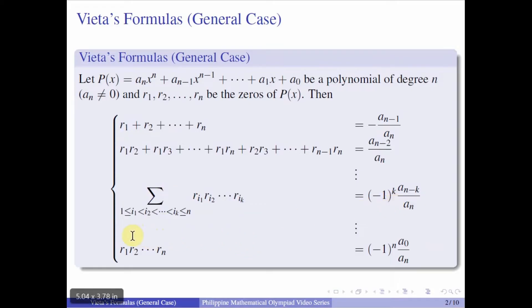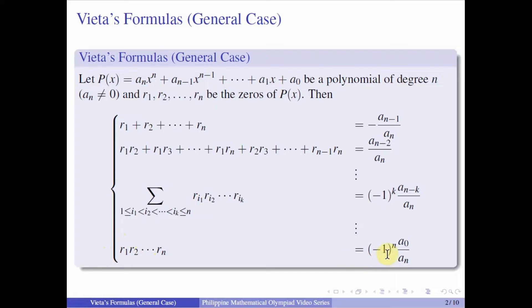The last formula is: just taking the product of all the roots, r sub 1 times r sub 2 dot dot dot times r sub n, this is equal to negative 1 raised to n times a sub 0 over a sub n.